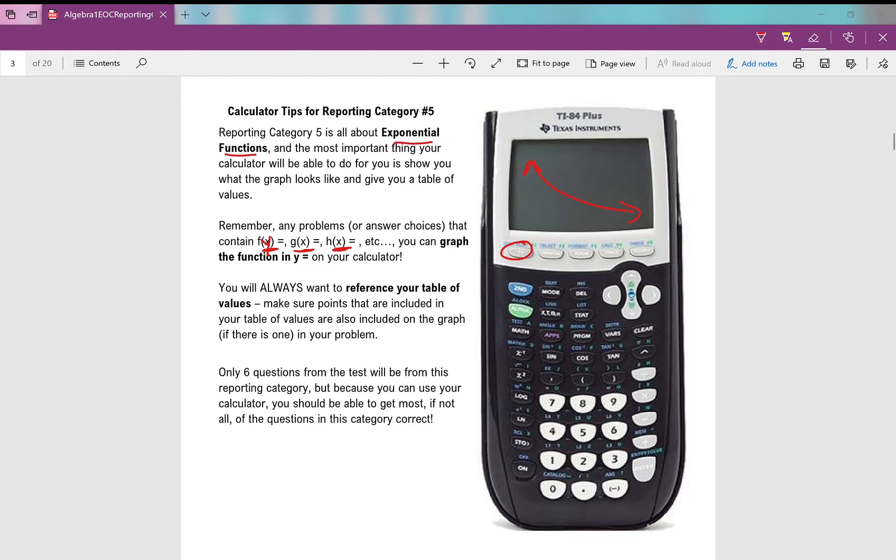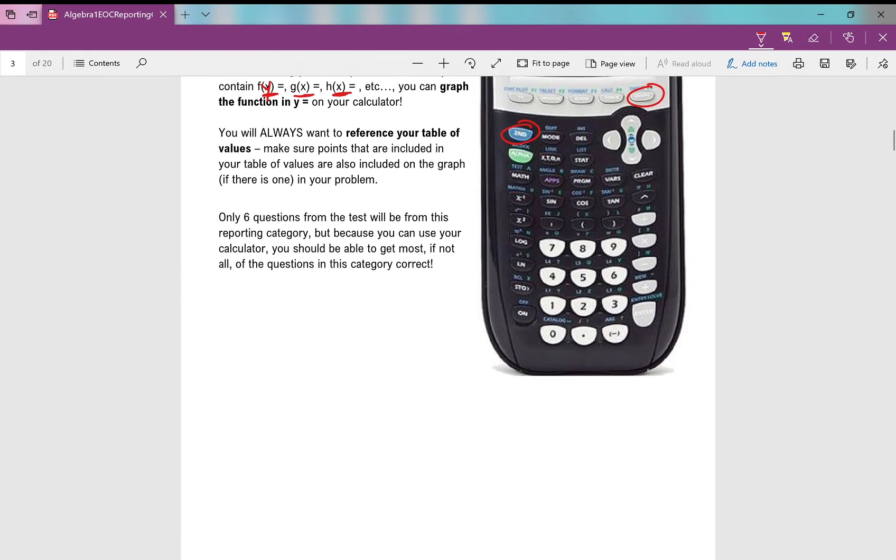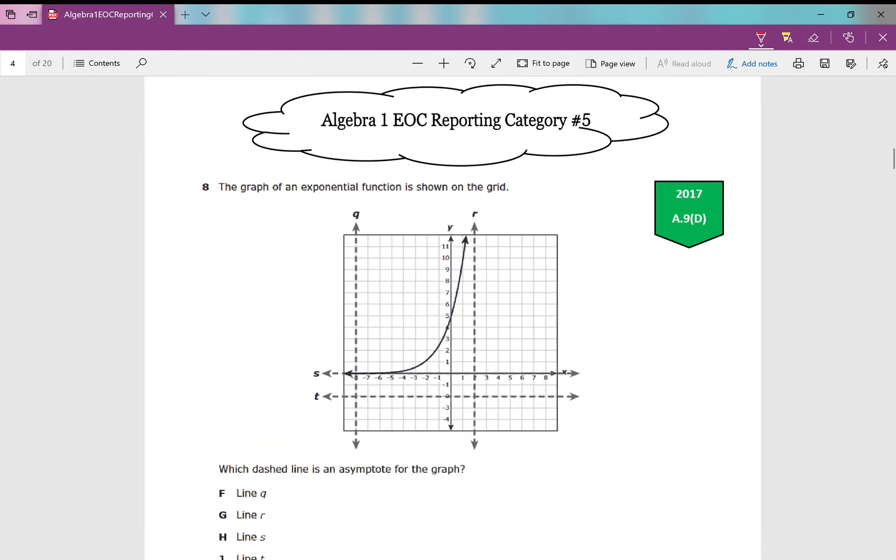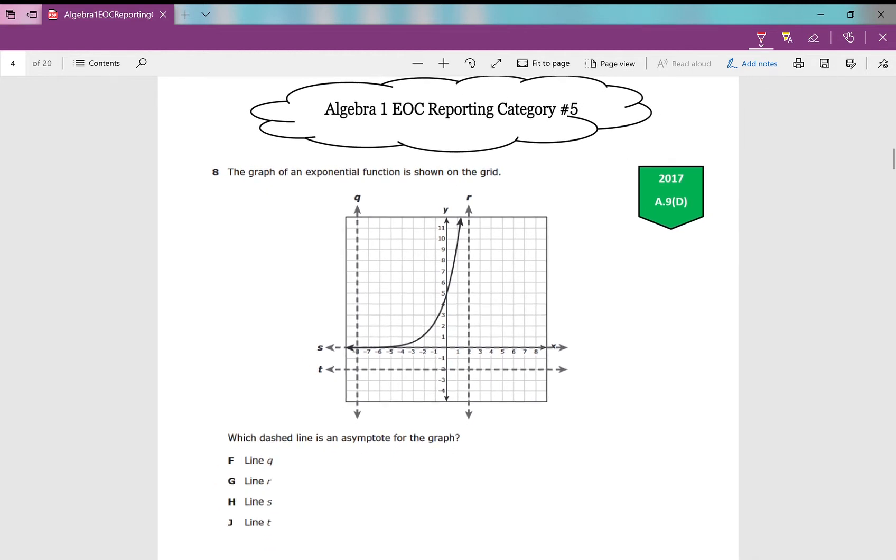The other thing you need to make sure you can look at on your calculator is your table of values. Second graph will show your table of values, so always reference those in this category. Let's go through these. There's only six questions in this category, so this should be fairly quick.